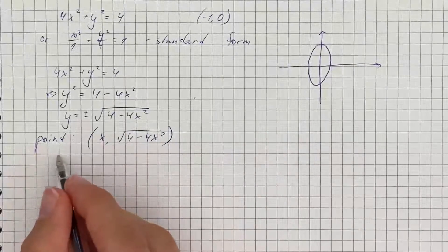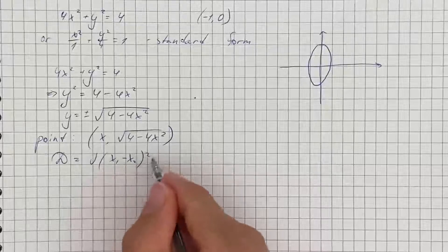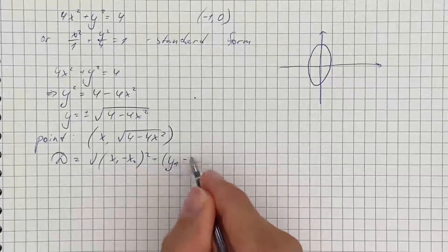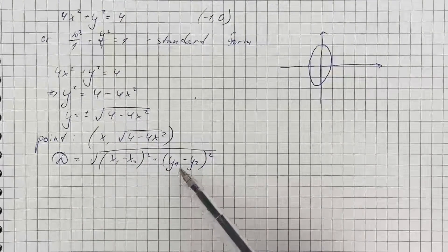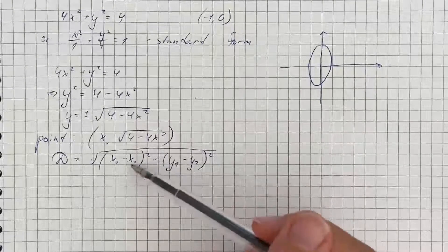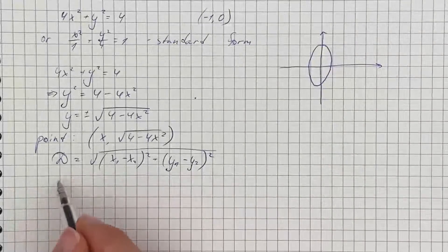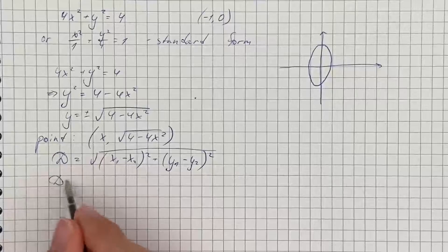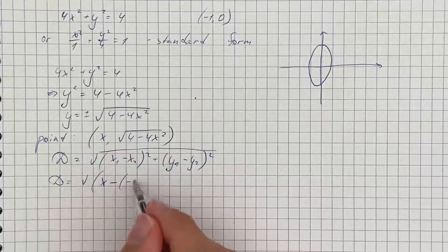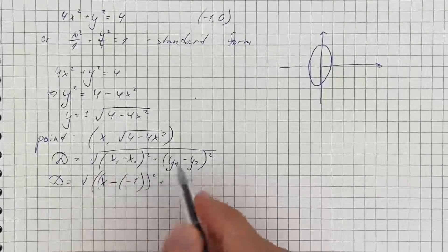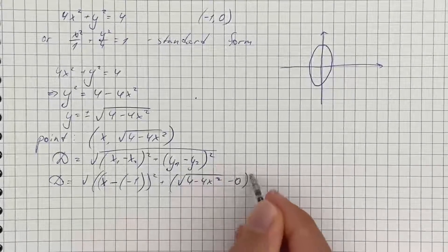The formula for distance is the square root of (x1 minus x2) squared plus (y1 minus y2) squared, where x1, y1 are coordinates for the first point and x2, y2 are coordinates for the second point. Substituting the coordinates of our point, we get the distance equals the square root of (x minus negative 1) squared plus (square root of 4 minus 4x squared, minus 0) squared.